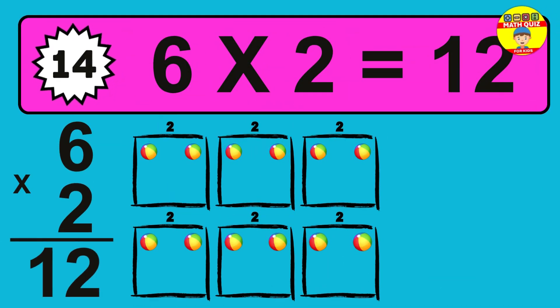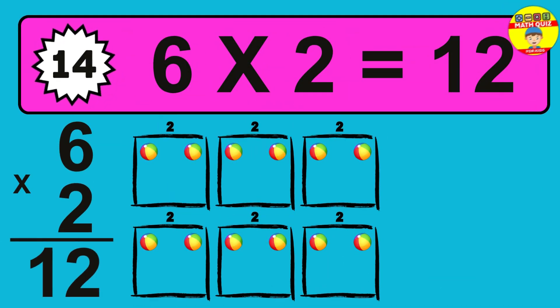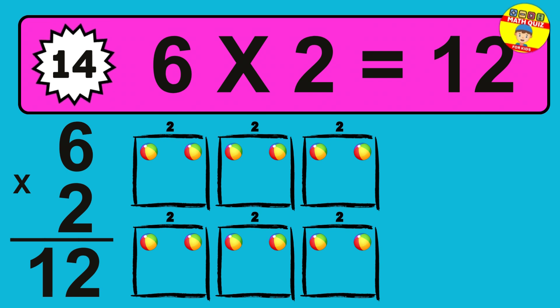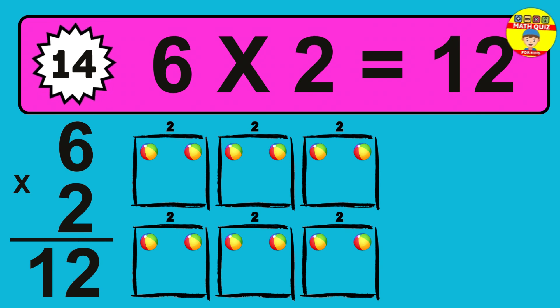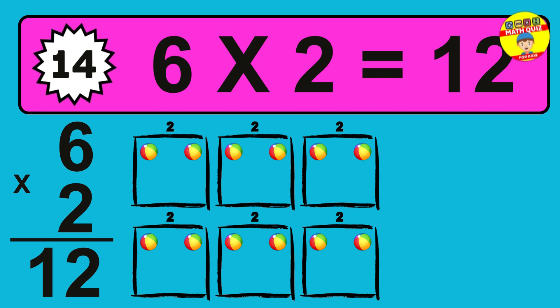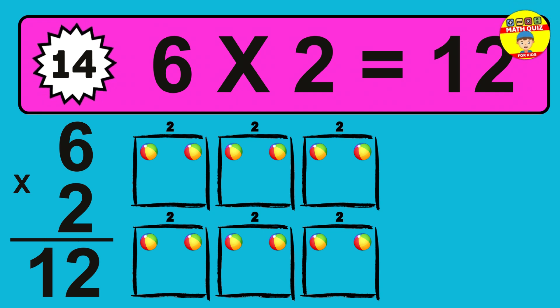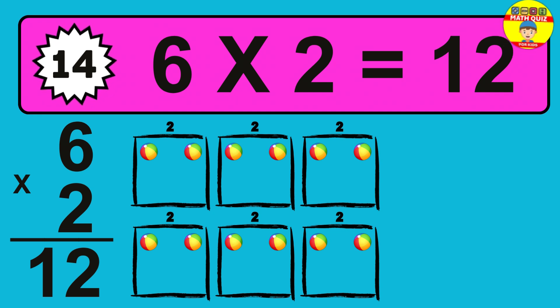Question 14. 6 times 2 equals what? So the answer is 6 times 2 is 12. To calculate, we have six groups with two balls each one. So how many balls do we have? Twelve balls.